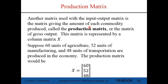Another matrix used with the input-output matrix is the production matrix, which gives the amount of each commodity produced — also called the matrix of gross output. This is represented by a column matrix X, where the entries are X₁, X₂, up to Xₙ. For example, suppose 60 units of agriculture, 52 units of manufacturing, and 48 units of transportation are produced. The production matrix X would be the column matrix with entries 60, 52, 48.